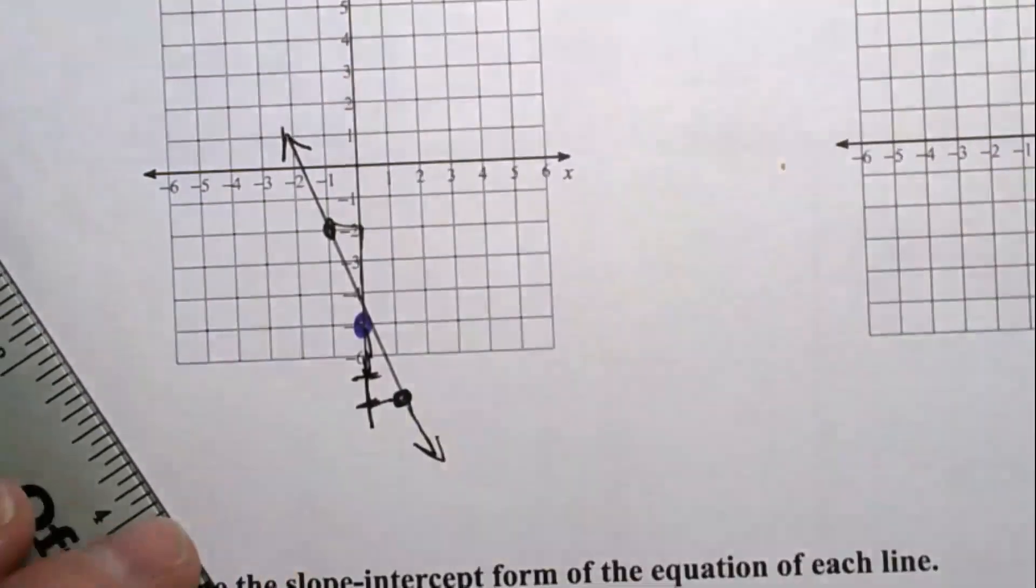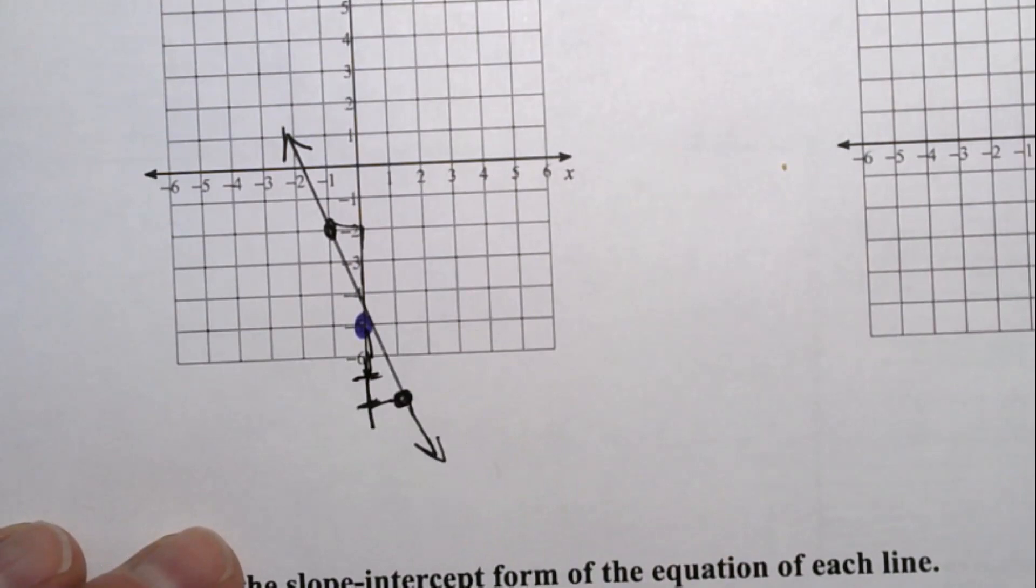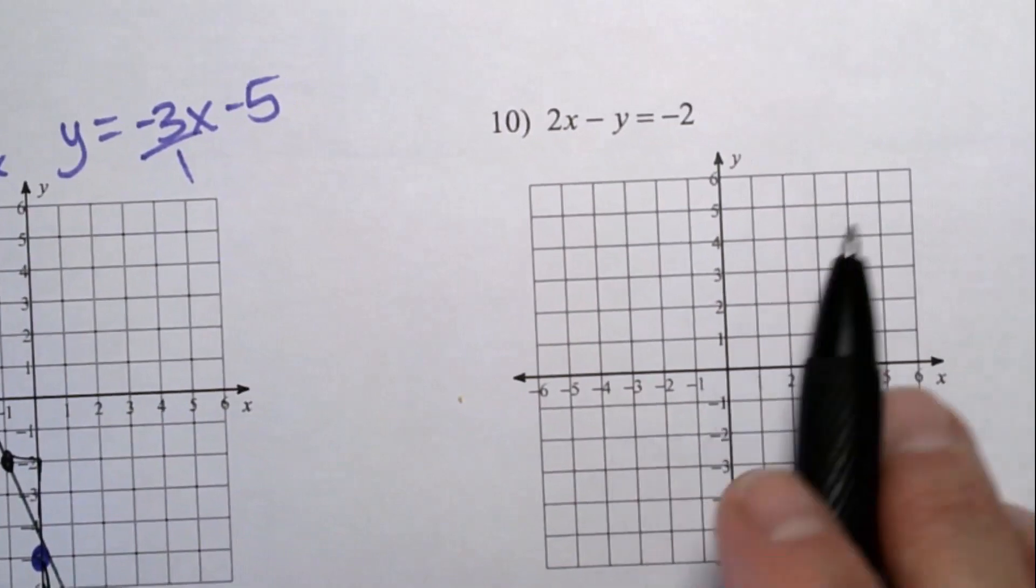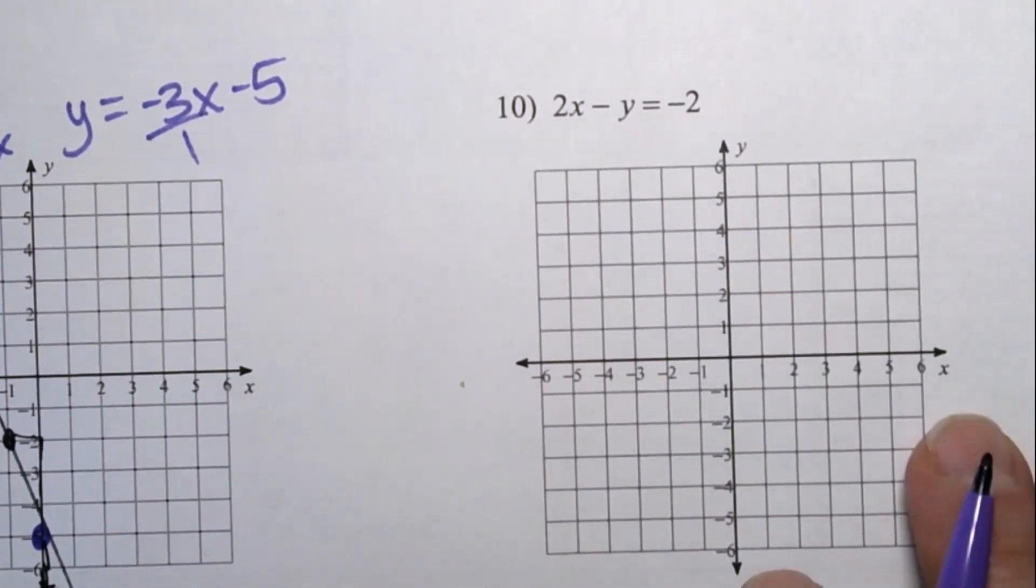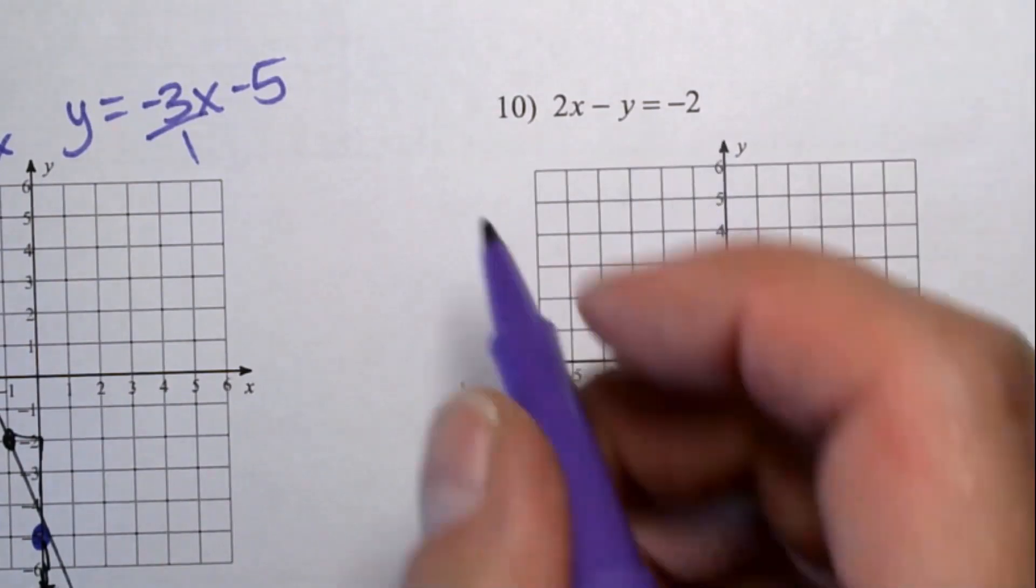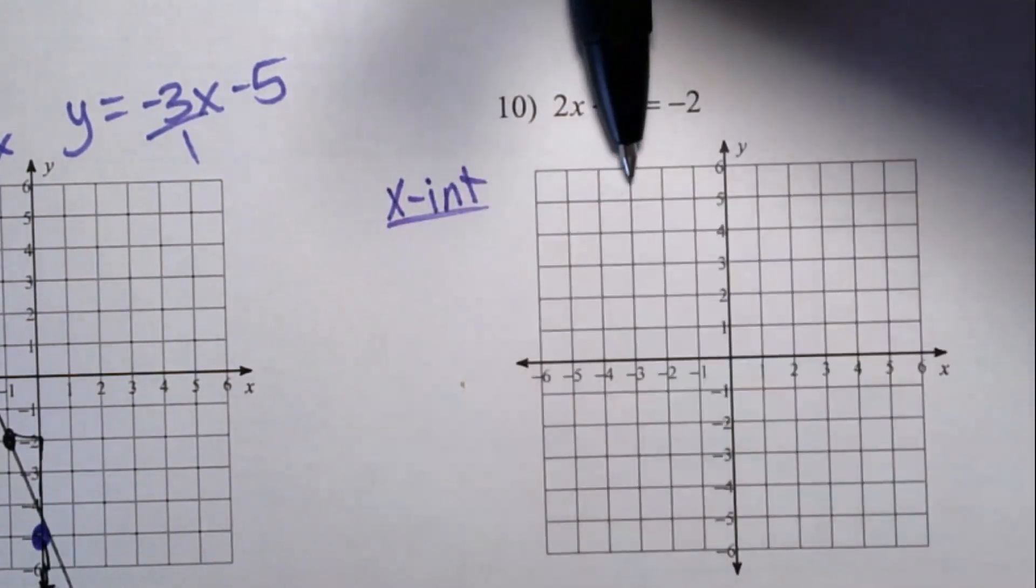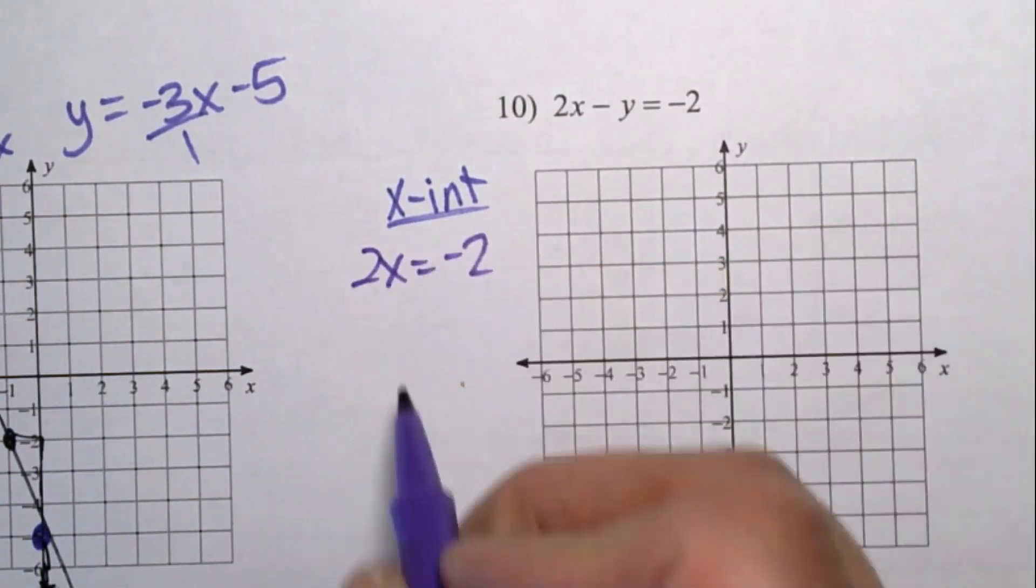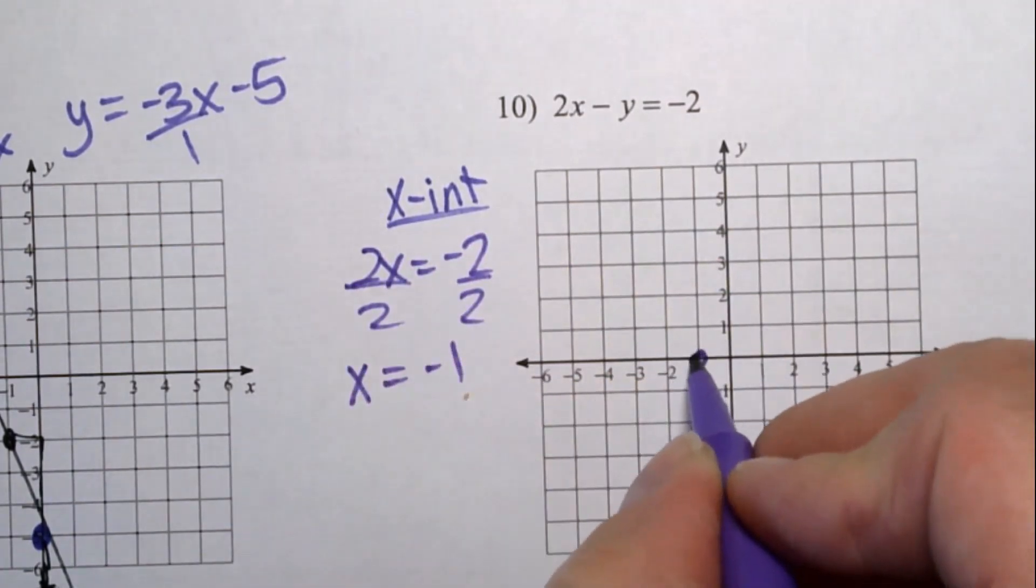So on the test, if you're taking my test, it doesn't matter to me if your graph is the right size or not. I want you to make it work. All the graphs are going to be 6 by 6 like this. All right, for this one, I'm going to go back to using the intercepts because I like intercepts more. So to find the x-intercept, I don't want the y, so we're going to cover that up. Write down what you see. I see 2x equals negative 2. Divide both sides by 2. I get x equal negative 1. That is my x-intercept right there.